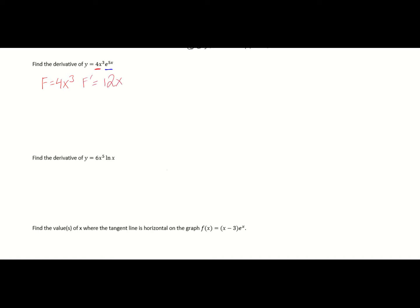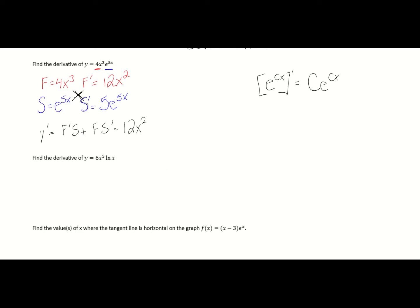F equals 4x cubed, so F prime equals 12x squared. S equals e to the 5x. Recall that if you have e to the cx, the derivative is c times e to the cx. So S prime equals 5e to the 5x. Therefore y prime equals F prime·S plus F·S prime, which gives 12x squared times e to the 5x plus 4x cubed times 5e to the 5x.